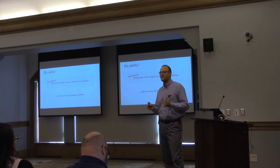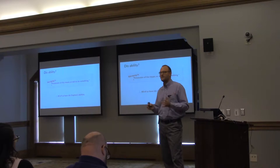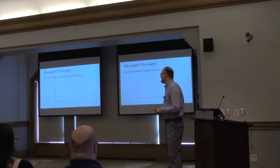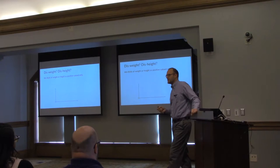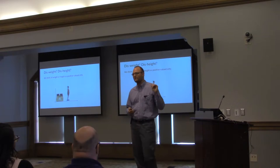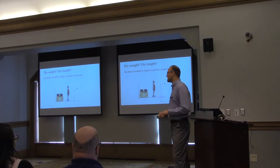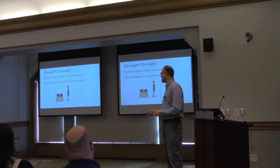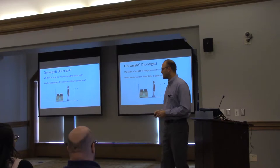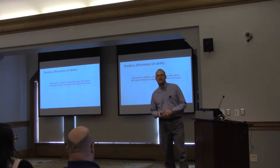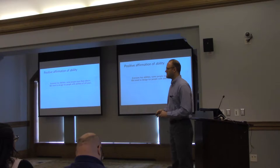We can also think about dis-ability as: if ability is the possession of the means or skill to do something, then not being in possession of those means could be considered a disability. Under this definition, we all have disabilities because we all have things we can't do. This helps de-binarize the notion of ability — it's not just 'you have a disability or you don't.' We all have abilities, and there's a creative notion here about what we're able to do and not do. I call this the positive affirmation of abilities — everyone has abilities, some people more than others, and we need to design for people with abilities of all types.